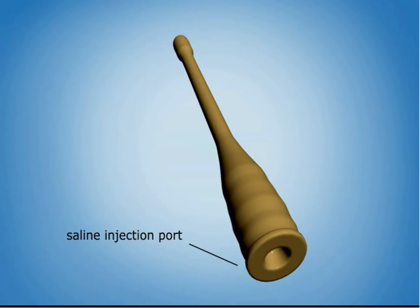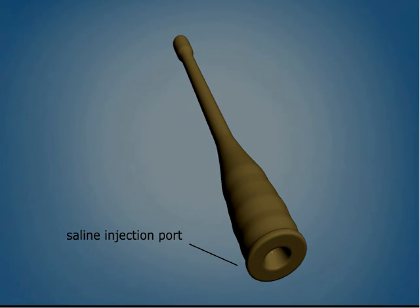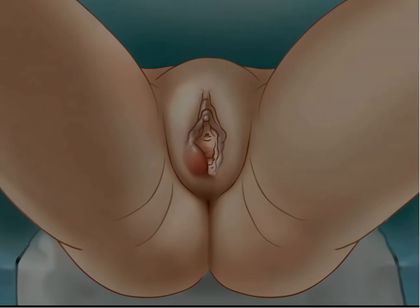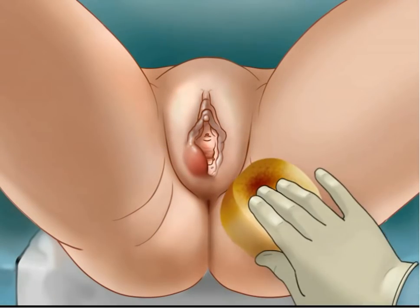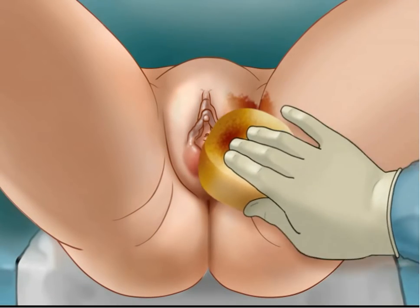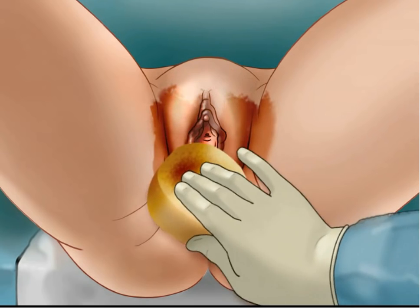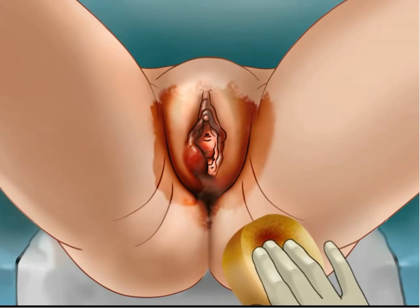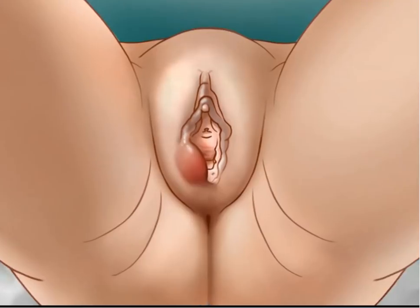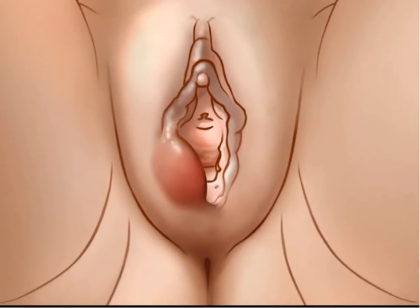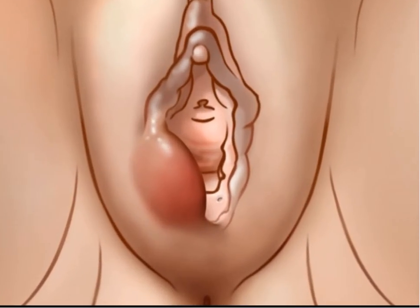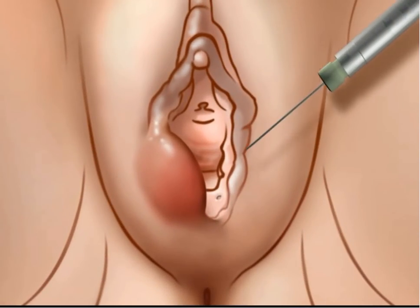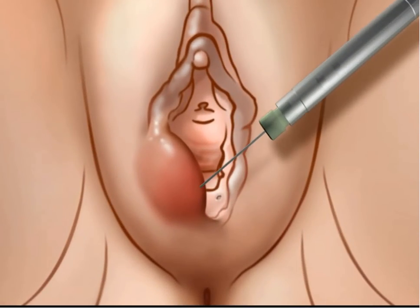Most procedures are performed as an outpatient procedure in the office or emergency room. The patient is placed in the dorsal lithotomy position and the area is cleaned with an antiseptic solution. Local anesthesia is sufficient for most cases. This can be achieved by infiltrating the skin overlying the planned incision with a 1% lidocaine solution.